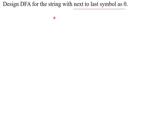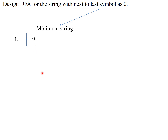Let us look at some of the possible strings which are accepted by the DFA machine. This will be the problem statement. First I will start with the minimal string where the next-to-last symbol is zero. So there are two zeros given — the next-to-last symbol is zero — so which is a valid string according to this problem statement. We have to construct the minimal DFA for this.